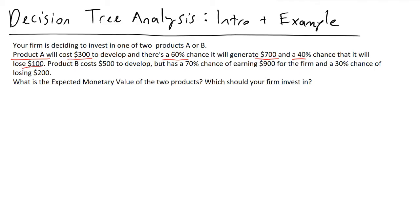That's product A. If we go with the path of product B, we're going to spend $500 to develop it, but our risk analysts have told us that there's a 70% chance of it making us $900 and a 30% chance of it losing $200 for us.